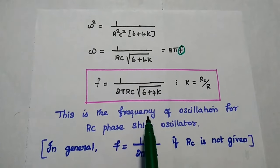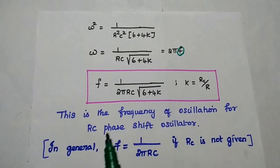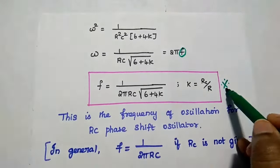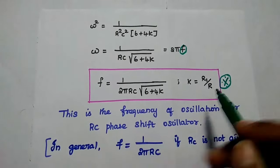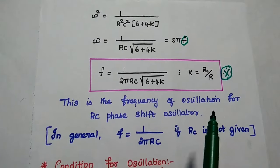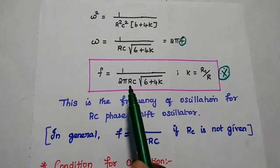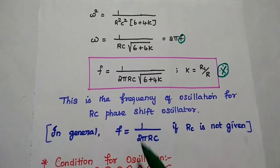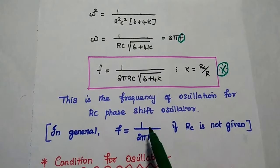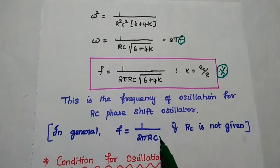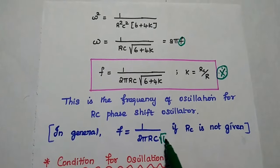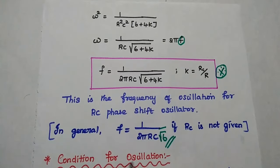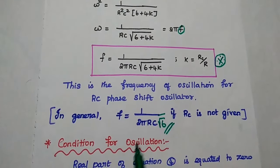This is the frequency of oscillation formula for the RC phase shift oscillator — a very important formula. If R_C is not given, we can take 4K as 0, and the frequency simplifies to: F = 1/(2πRC·√6). This is the simplified frequency of oscillation for the phase shift oscillator.